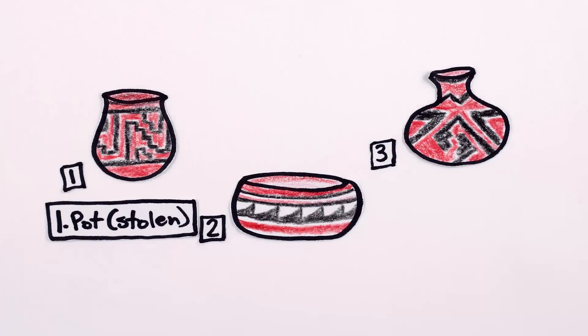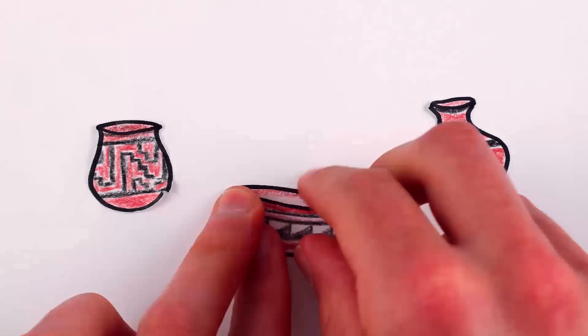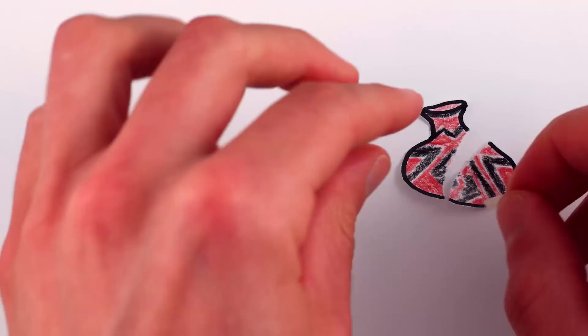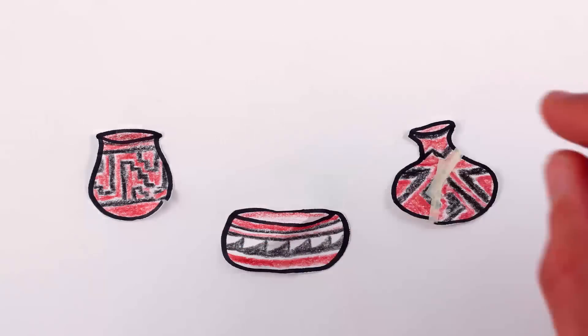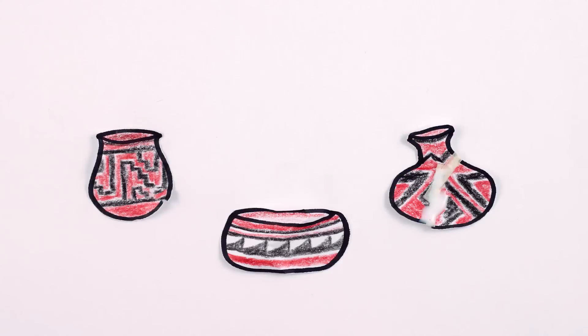They weren't cataloged. In fact, they were very roughly handled. Some had been broken and repaired with masking tape and Elmer's glue. With masking tape? Yeah. With Elmer's glue.